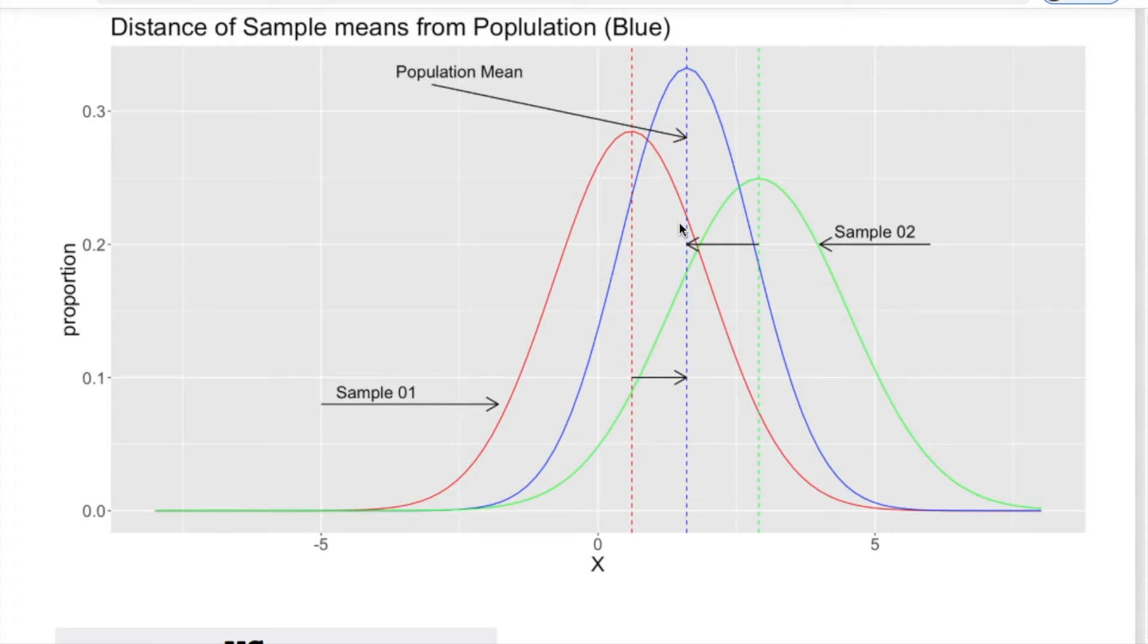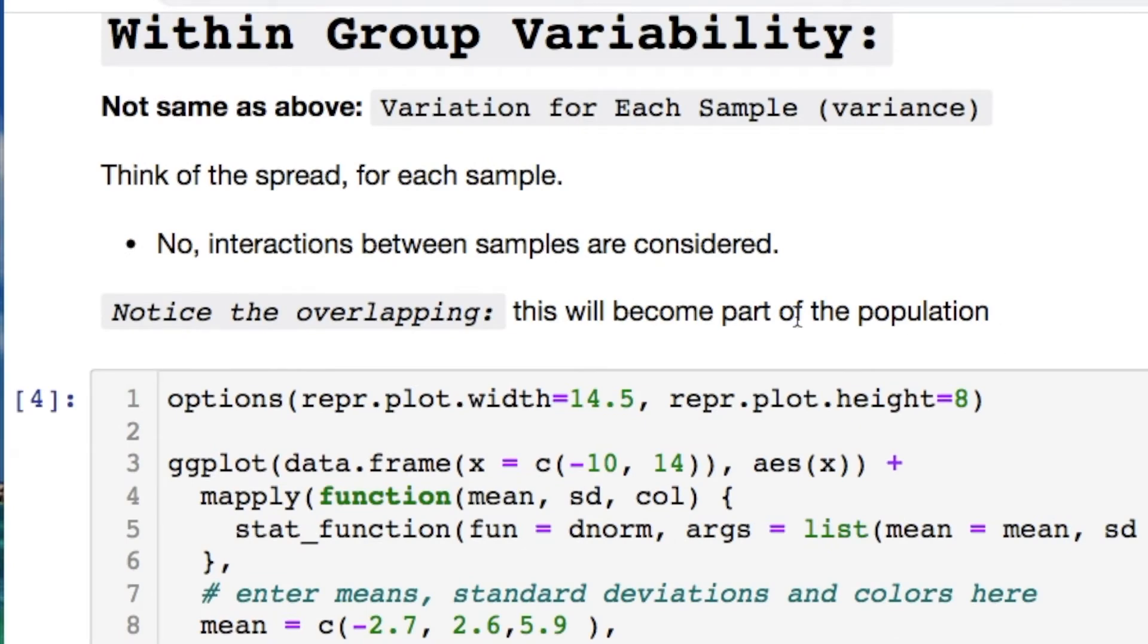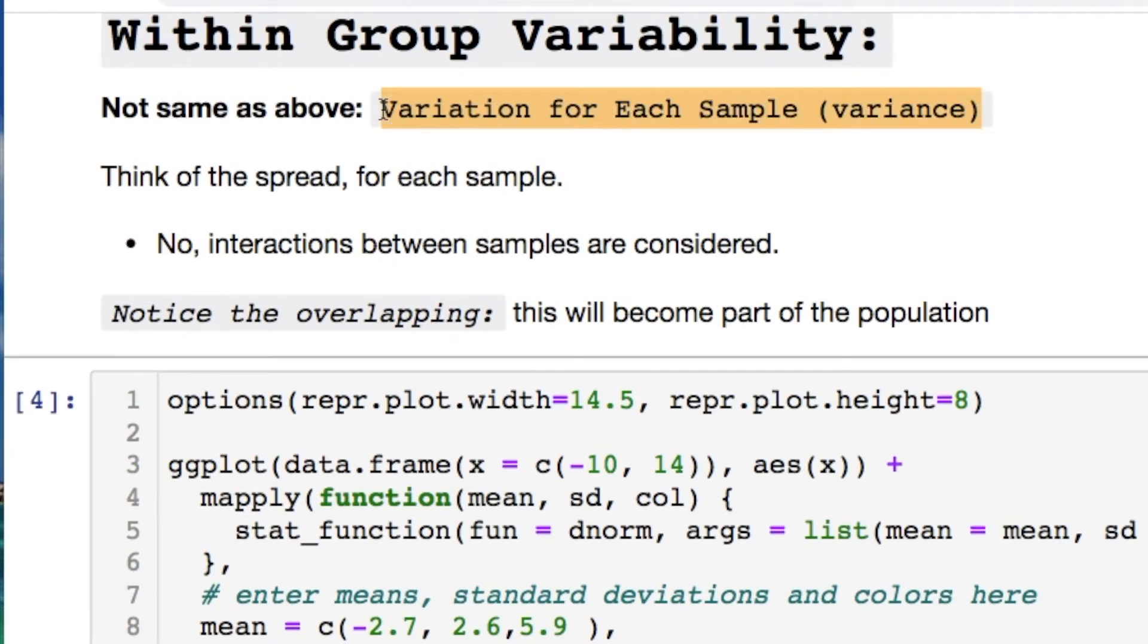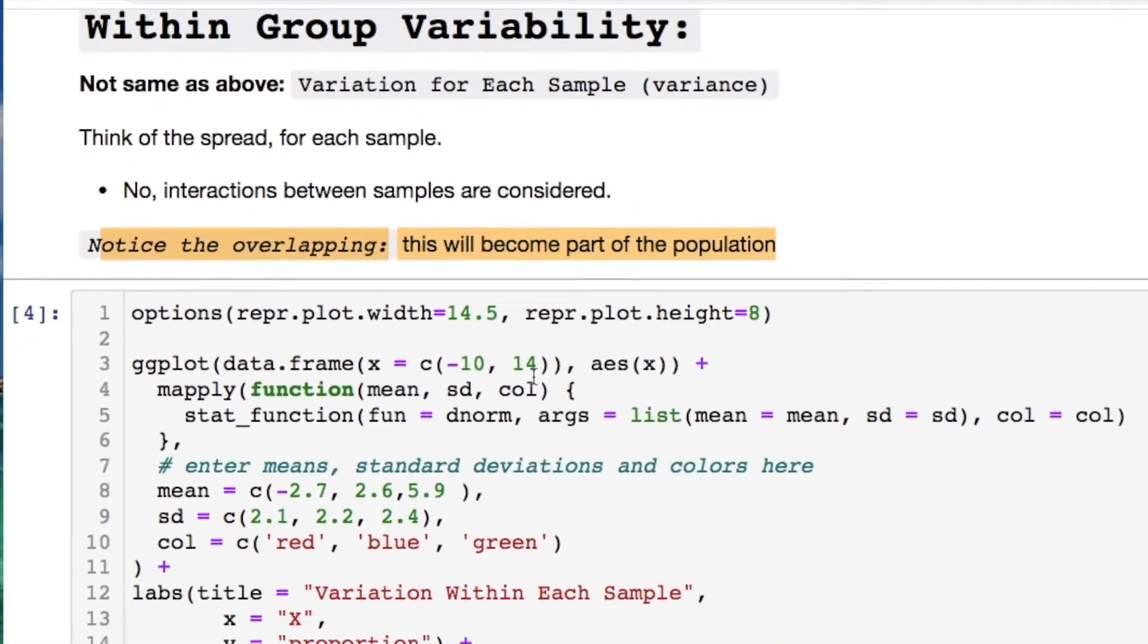The amount of overlap that we have for these samples is going to contribute towards our population mean. The next thing we need to look at is within groups. Within group variability is different. This is the variation for each sample. It's the spread of each sample.